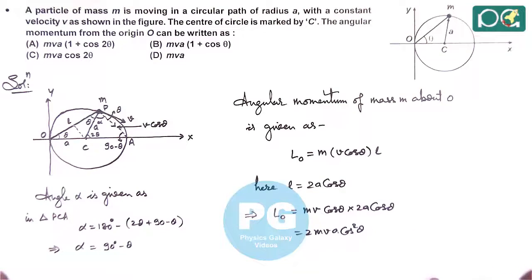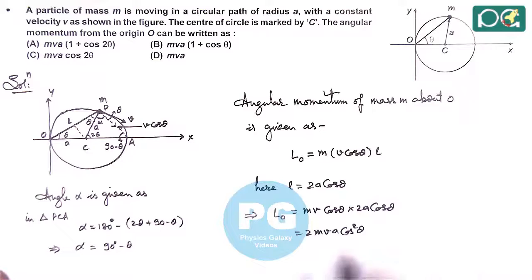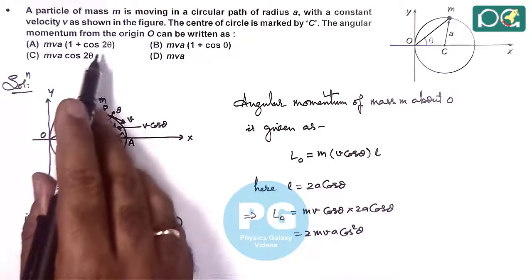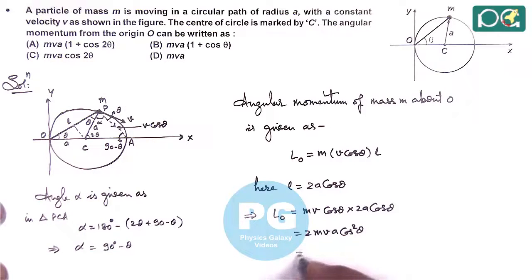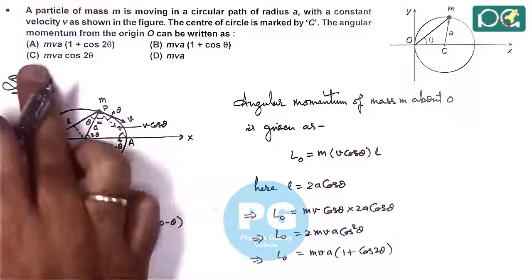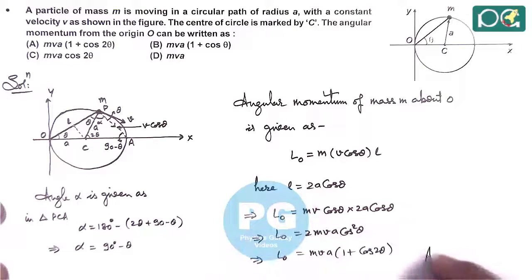Now in this situation, this 2 cos theta we can rewrite in form of cos 2 theta, as in these 4 options there is no square term available. So we can write MVA times 2 cos square theta, we can write as 1 plus cos 2 theta. Now this matches with option A in the given situation. So here answer to this question is option A.